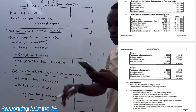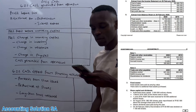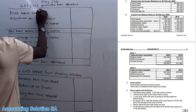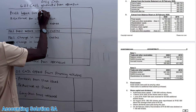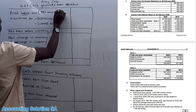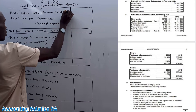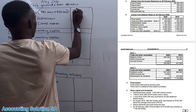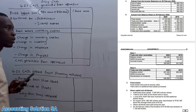The first line is profit before tax. In this case, looking at our income statement, we are only given net profit after tax. Since we need profit before tax, we take the after-tax amount of 980,000 and add back tax of 420,000, giving us profit before tax of 1.4 million — that's where we start.